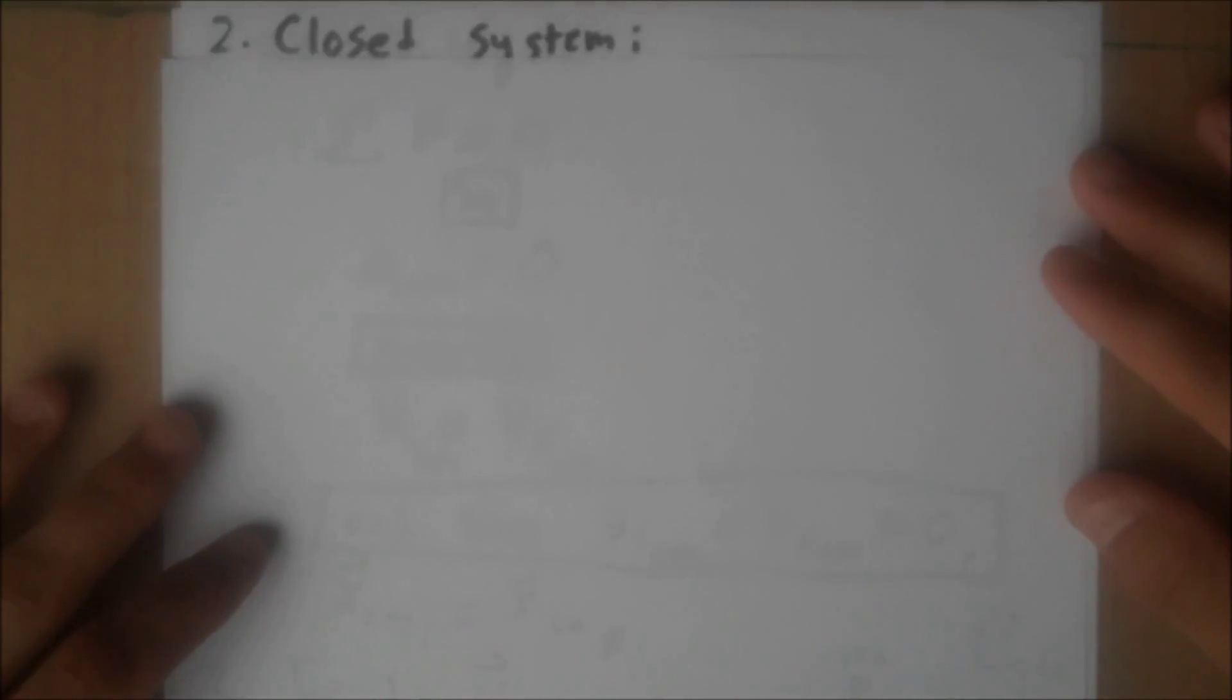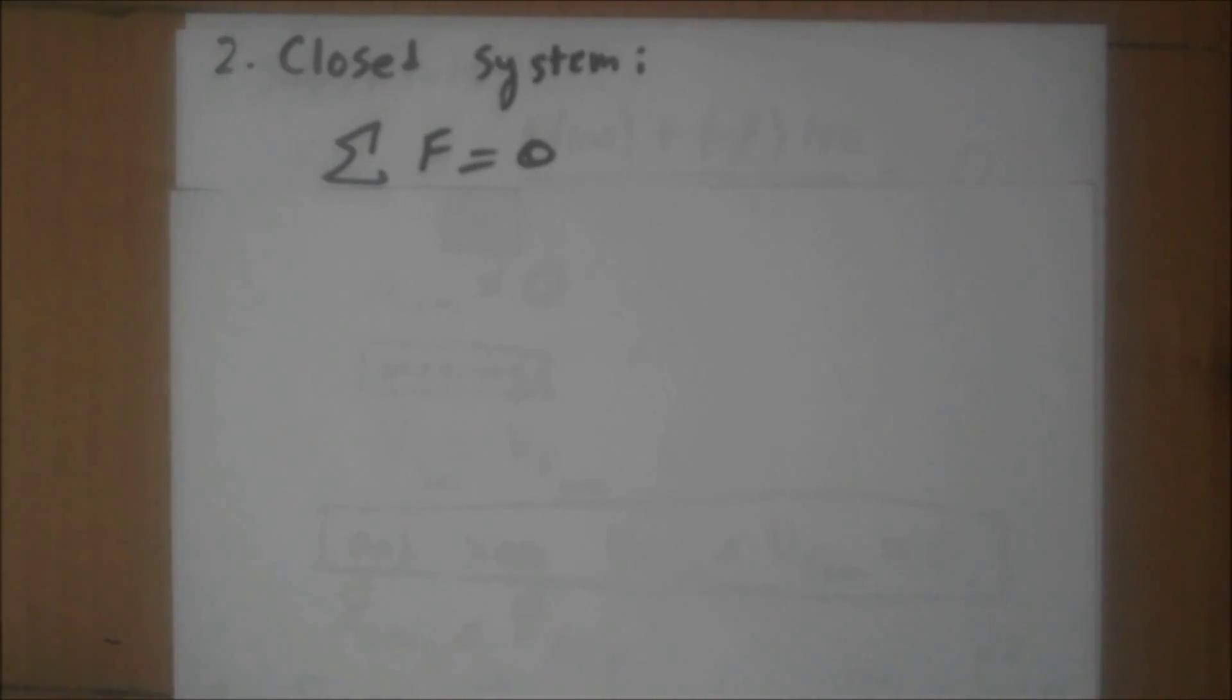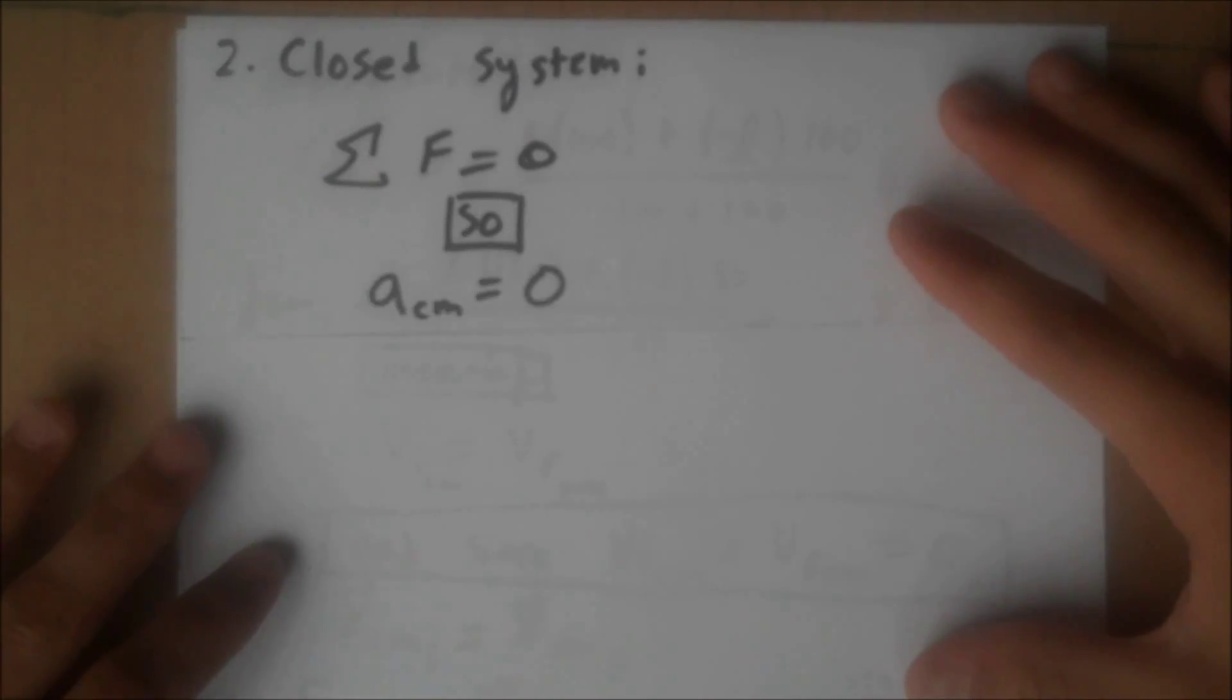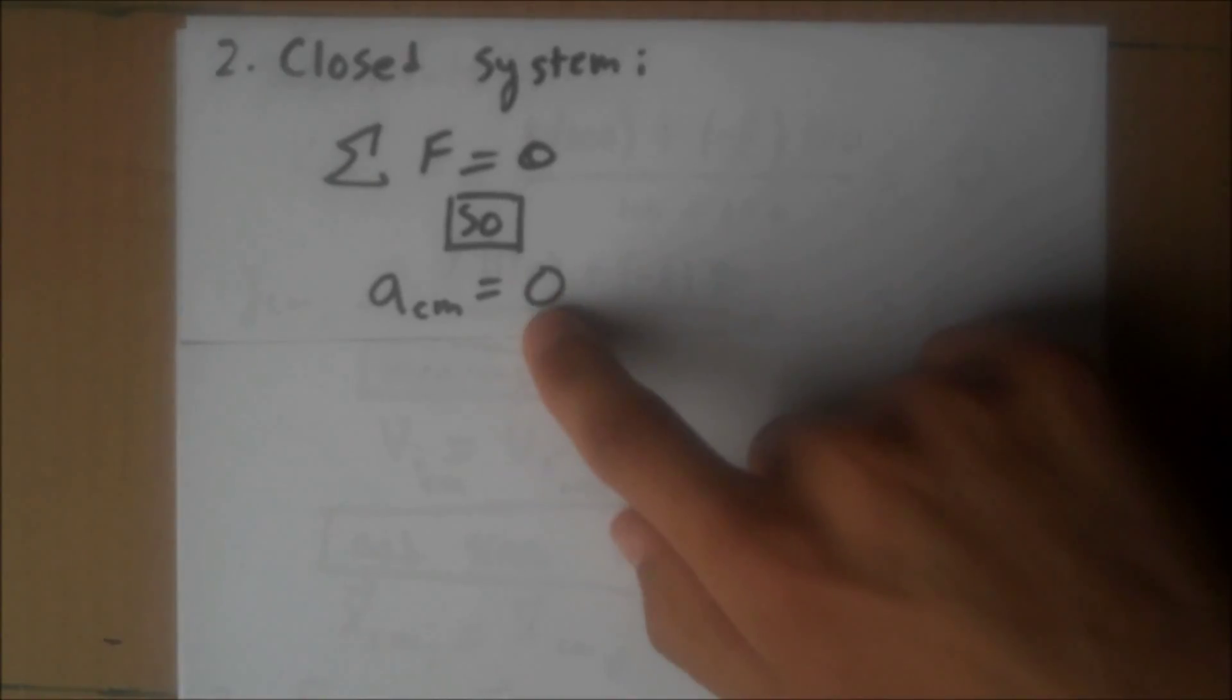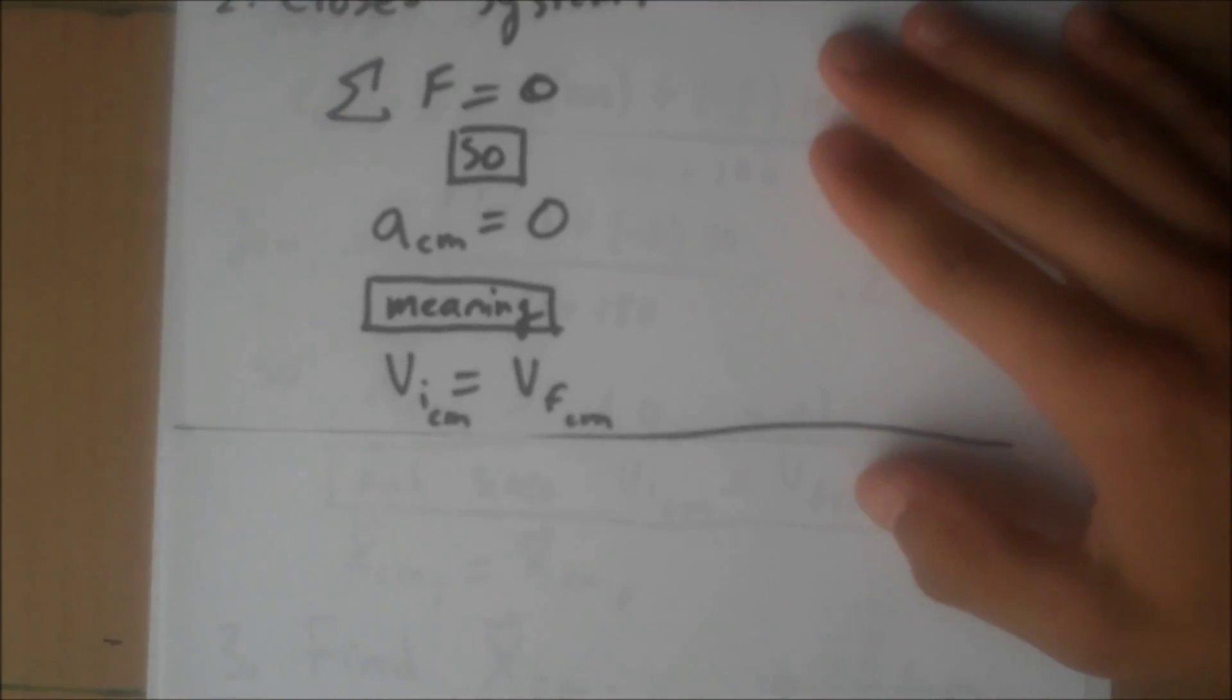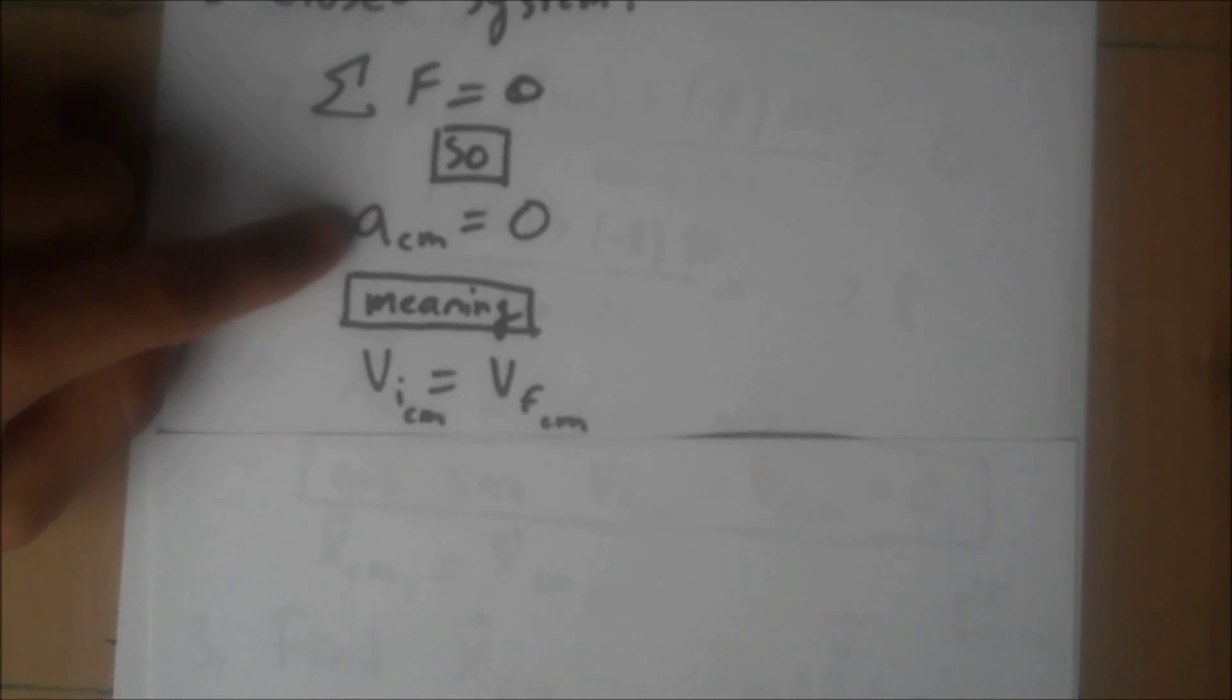The first thing we should take note of is that this is a closed system. The sum of the forces is equal to zero. There is no force that can be exerted in the plane of the ice because the ice is perfectly frictionless, as the problem stated. What that means is the acceleration by Newton's second law has to be zero, acceleration of the center of mass.